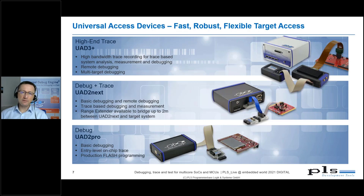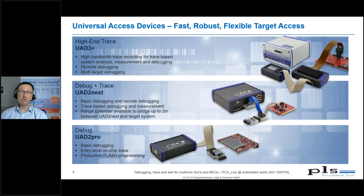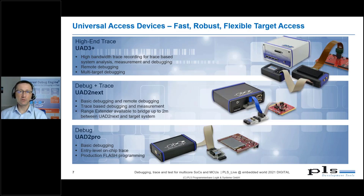The UAD2 NEXT, shown in the middle of this slide, is the all-rounder in our family. In addition to the debug interfaces and CAN, it also supports trace interfaces and can capture up to 512 megabytes of trace data from the target. For this purpose, the UAD2 NEXT is extended by plug-in trace modules for different types of trace interfaces. For connecting the UAD2 NEXT to your PC, either USB or Ethernet can be used, so you can also put the device in your company network or access it from the home office.